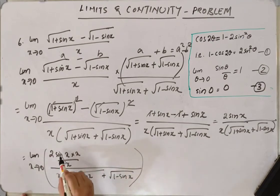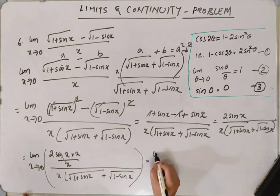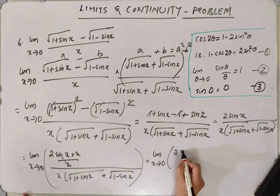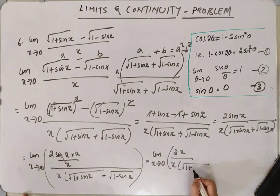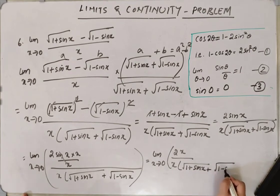So sin x by sin x becomes 1. So we are left with 2 into x, 2 x by x. x and x gets cancelled. So what we can do now?